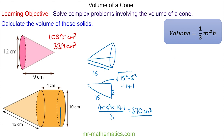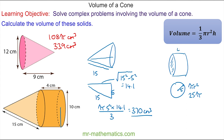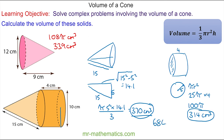For the cylinder, we work out the area of the cross-section, which is a circle with radius 5, giving an area of πr² = 25π. Multiplying by the depth of 4 gives 100π, which is approximately 314 cm³. The total volume is the sum of the cone and the cylinder, which is approximately 684 cm³.